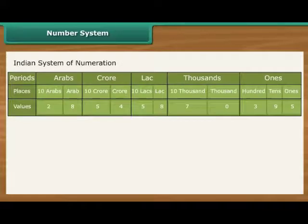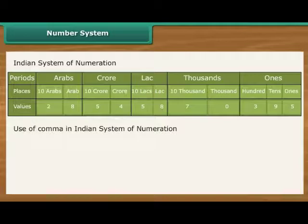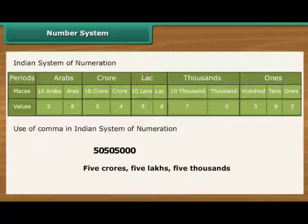Number system. In our Indian system of numeration, we use ones, tens, hundreds, thousands, and then lakhs and crores. Commas used to mark thousands, lakhs and crores. The first comma comes after hundreds place, three digits from the right, and marks thousands.